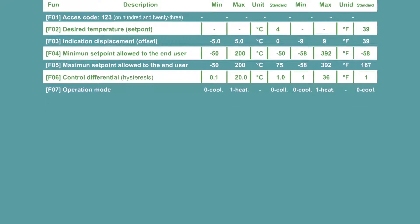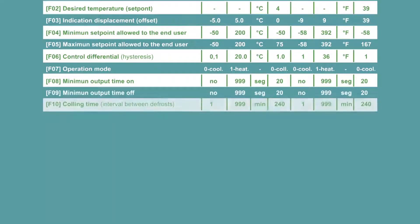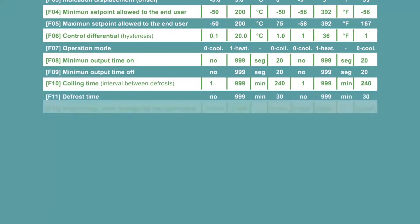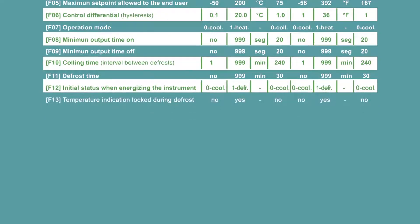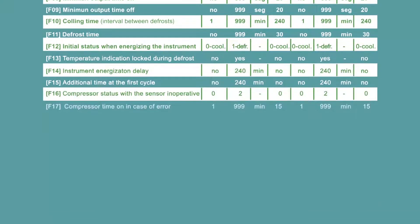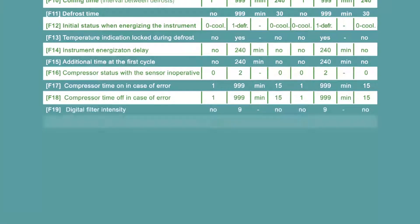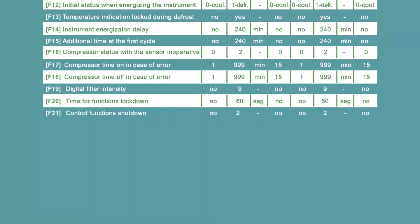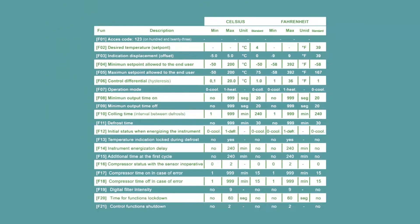It lists the parameters with its description and set of values, minimum and maximum, for Celsius and Fahrenheit units. Important: Specified in the right column are the factory default parameters. Set these values according to your needs or application within the minimum and maximum range of each function.